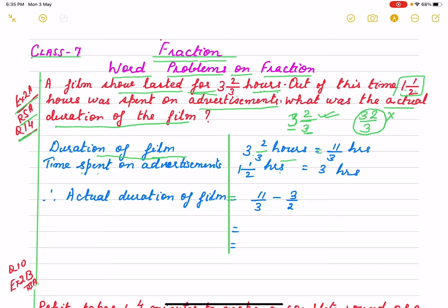When you change it to an improper fraction, it will be three into three plus two — that is nine plus two — eleven by three hours. Then one and a half hours was spent on advertisements. So: time spent on advertisements = one and a half = three by two hours. The statement must be clear, and the calculation part you will do on this side — don't mix here and there. The equal sign must follow a straight line.